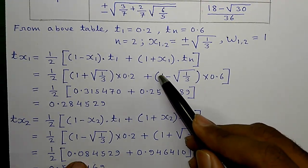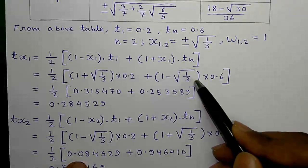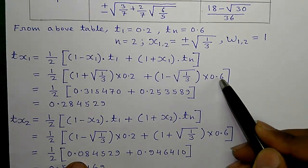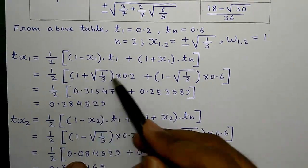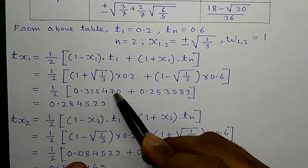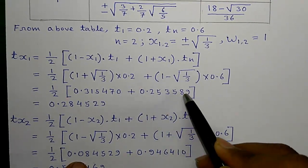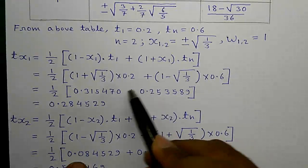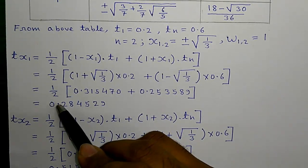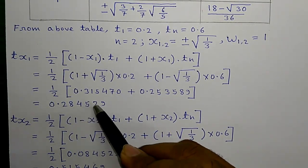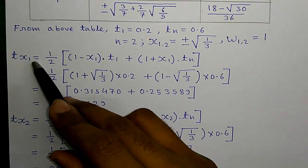That is 1 minus root over 1 by 3 times Tn which is 0.6. So, by calculating this, you will get this by calculating this, you will get this. So, adding them up and multiplying with 0.5, you will get 0.284529. That is equals to Tx1.